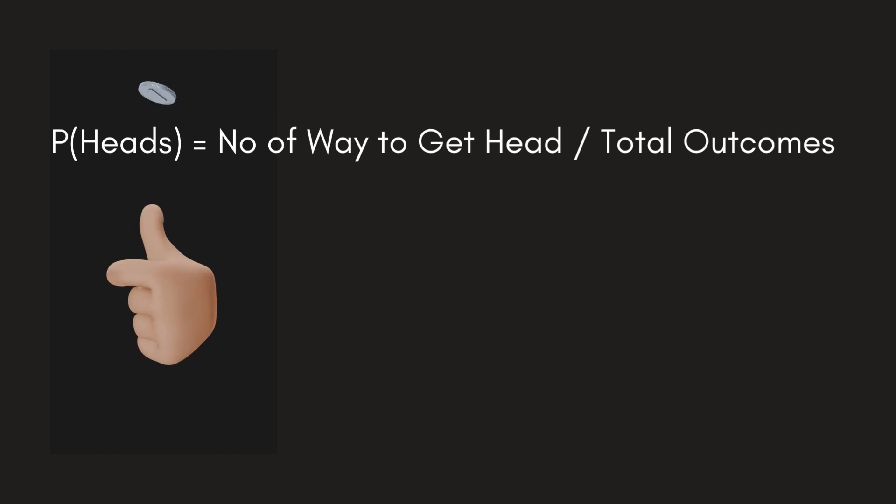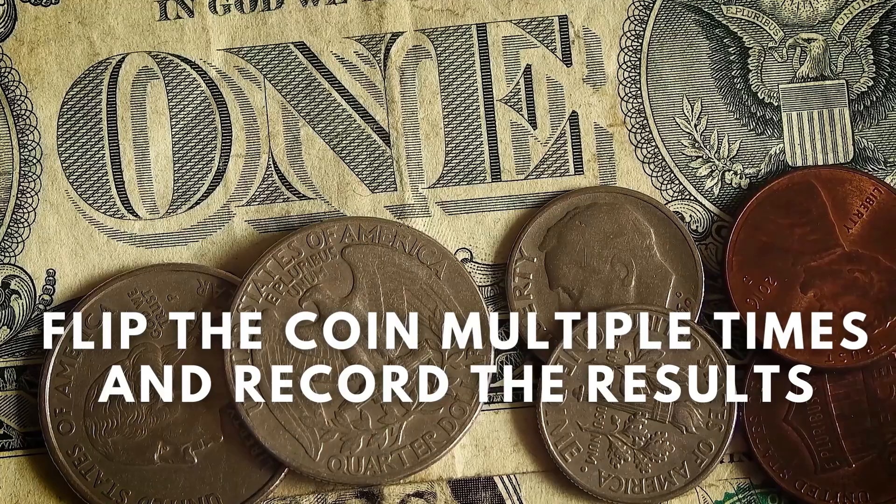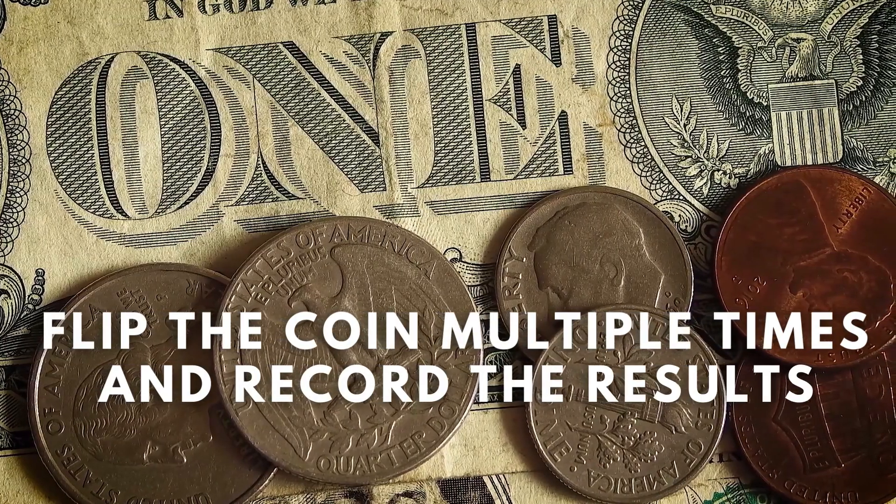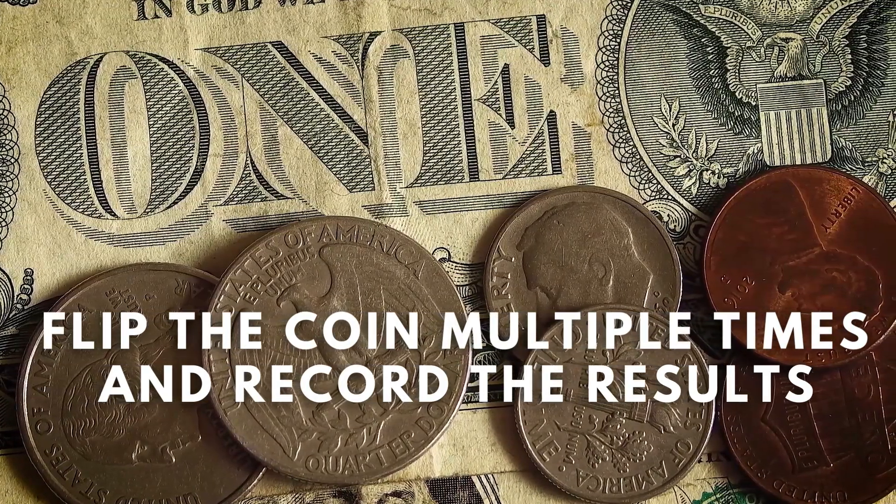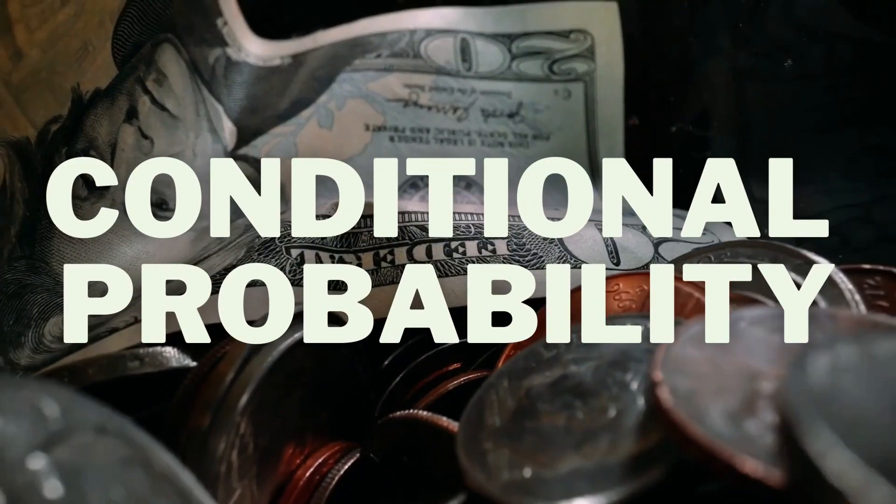Now let's say you flip the coin multiple times and record the results. You use that data to calculate the probability of getting heads in the next flip. This is where you applied conditional probability.